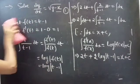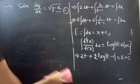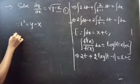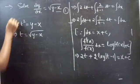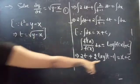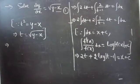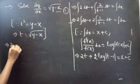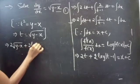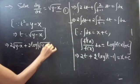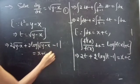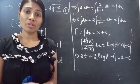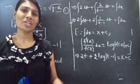Since t squared equals y minus x, we have t equals square root of (y minus x). Substituting back, the required solution is: 2·√(y minus x) plus 2·log|√(y minus x) minus 1| equals x plus c. This completes the problem. We have seen a problem from differential equations in this video — hope you understand. See you in the next video, bye bye.